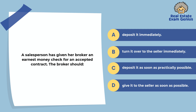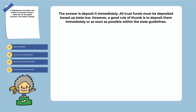A salesperson has given her broker an earnest money check for an accepted contract. The broker should: deposit it immediately, turn it over to the seller immediately, deposit it as soon as practically possible, or give it to the seller as soon as possible. The answer is to deposit it immediately. All trust funds must be deposited based on state law; a good rule of thumb is to deposit them immediately or as soon as possible within the state guidelines. The funds should be deposited in a trust account with no other funds, and perfect accounting of every dollar in and out is required.